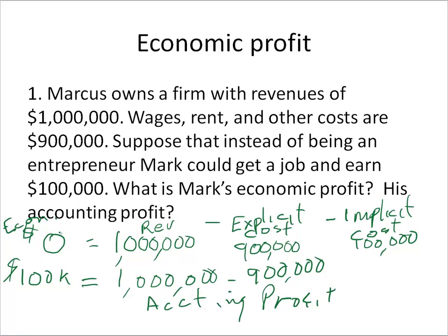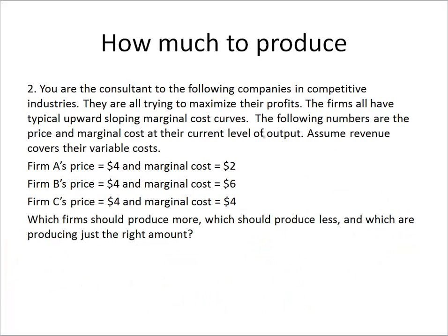Zero economic profit is the long-run equilibrium — he's making what he would make in the next best industry. If his implicit cost were 150,000, we'd have one million minus 900,000 minus 150,000 equals negative 50,000, giving him an incentive to exit. If foregone wages were only 50,000, we'd get positive 50,000 — he has an incentive to stay, and other firms would try to copy that.